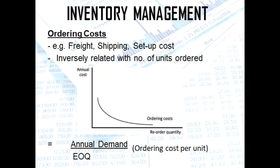Ordering costs involve your freight, your shipping, or setup costs. It is inversely related with the number of units ordered. As you can see in the graph, as the number of units you order at one time increases, the ordering costs per unit decreases.